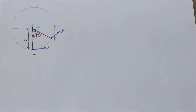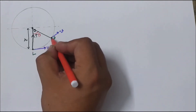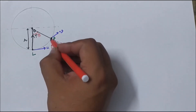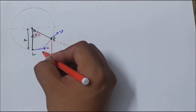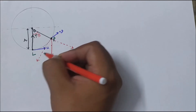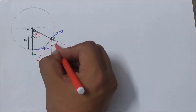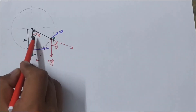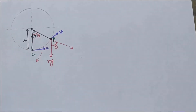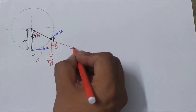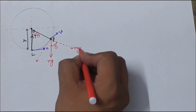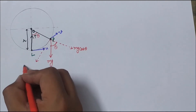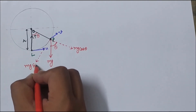If the particle has mass m then the weight of the particle will act downward. This weight will be resolved into two components — one is the base component and another is the vertical component. Since these two are parallel lines and this is a transversal, according to corresponding angles this angle will again be theta. So this component of weight will be mg cos theta and this component of weight will be mg sin theta.